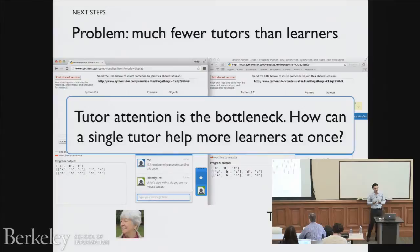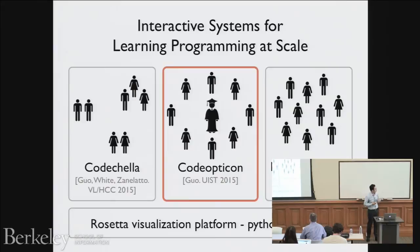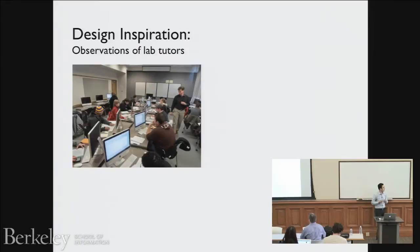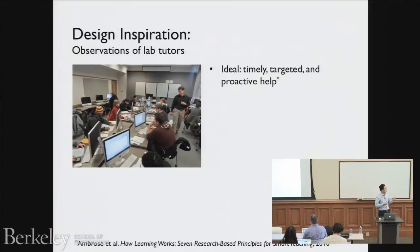For that I built a follow-up system called CodeOpticon, published and presented at UIST a few months ago. I went back to the lab to observe tutors instead of students. In a typical lab situation, tutors want to provide timely and targeted help — ideally going up to a student right away when they raise their hand. They also want to provide proactive help: if they see someone squirming or stuck or frustrated, they want to politely nudge and say, do you need help?